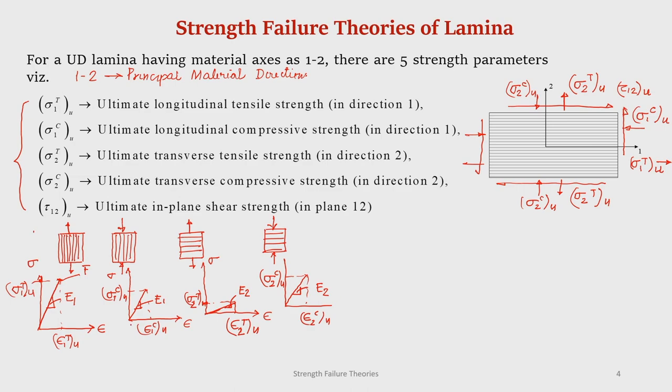In all these cases, one assumption is that the relationship is linear till failure. Again, we are not considering what actually happens when the lamina is subjected to compression load and fails — whether it is fiber micro-buckling or fiber-matrix debonding. Those things we are not considering — that is why these are macroscopic failure theories. However, in microscopic failure approaches all these things are actually considered to understand the mechanism of the defined type of failure.